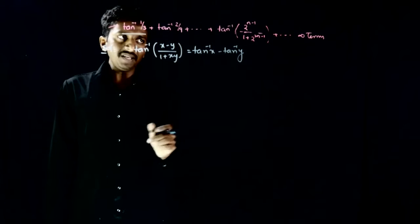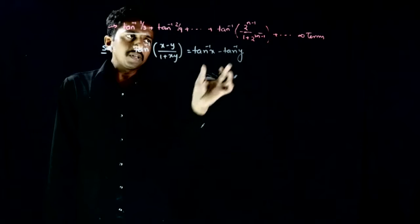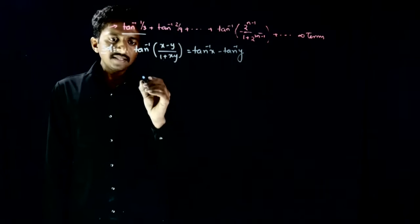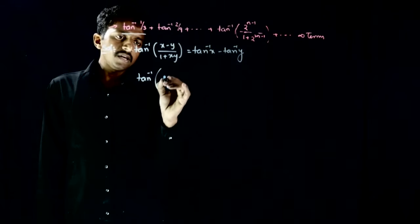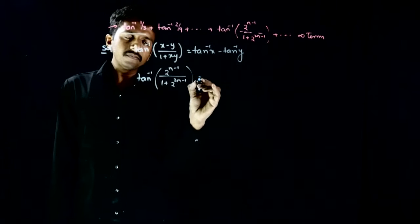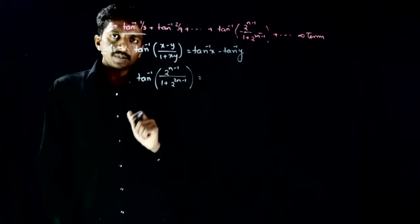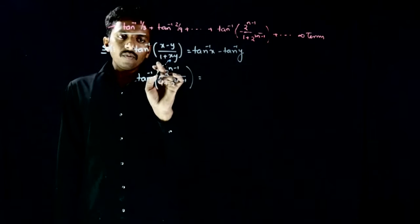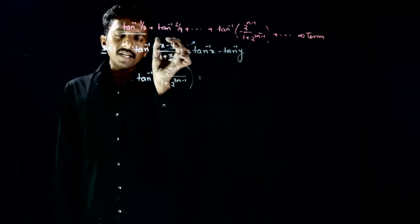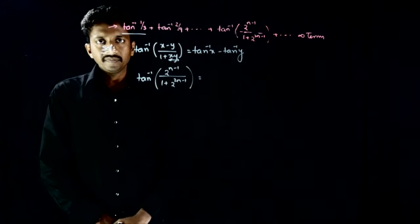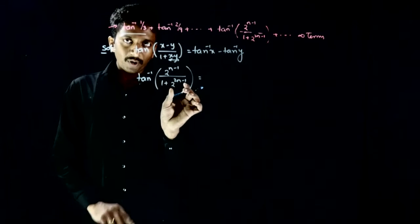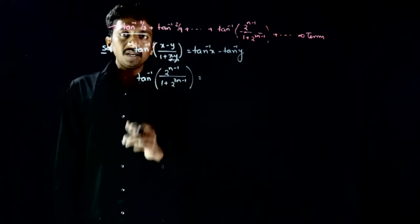Rather than splitting every term individually, I'll split the general term — once I split the general term, the pattern will become clear and I can split every term. For splitting, the denominator should have 1 plus the product of two terms, and the numerator should have the difference of those same two terms. You have to adjust the expression until it matches this form.